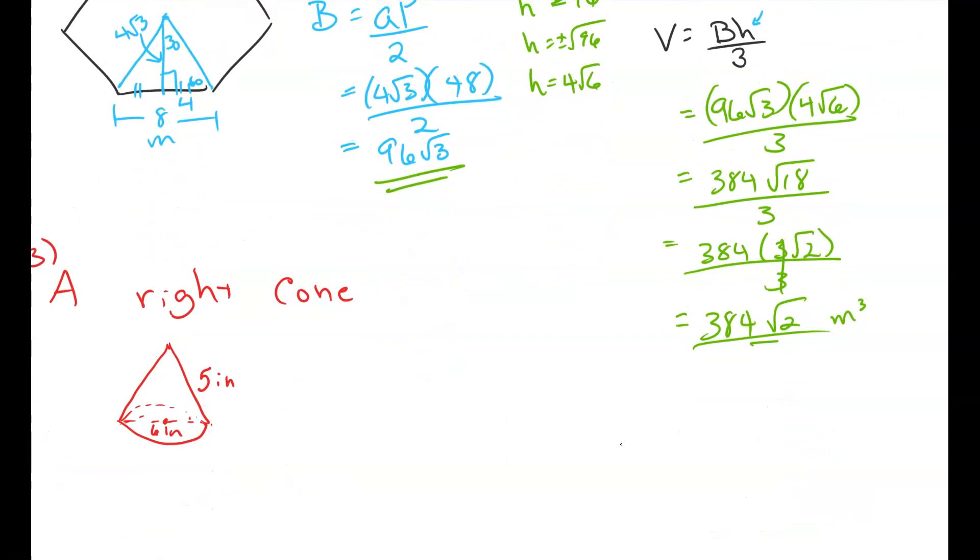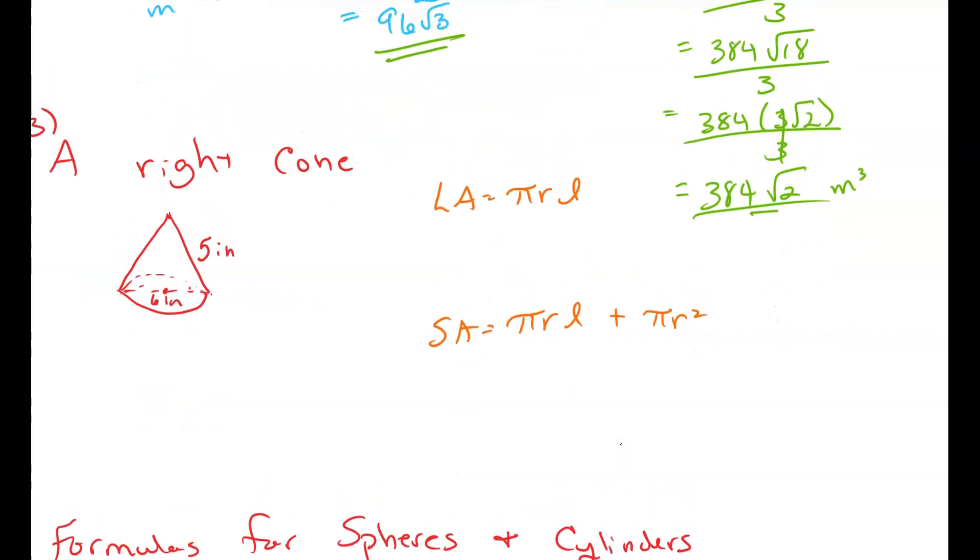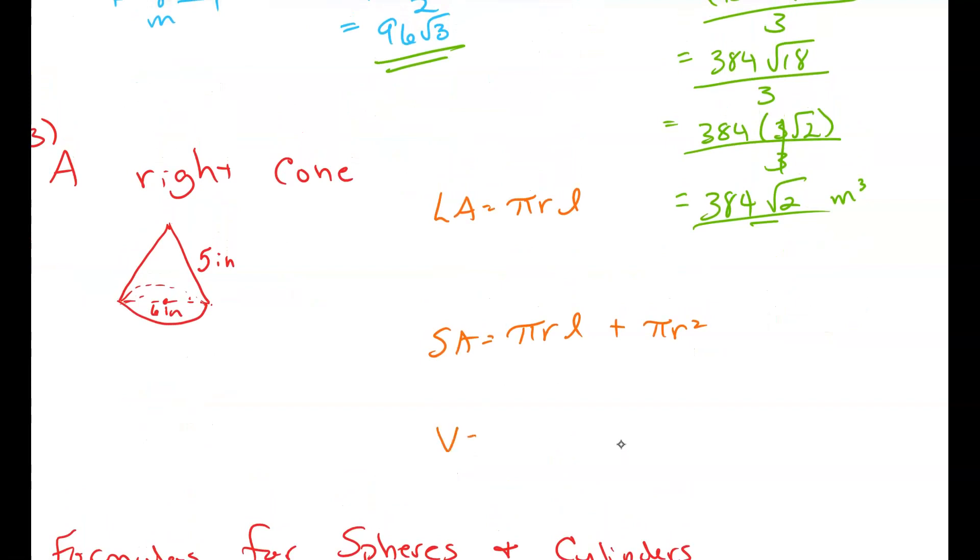Now cone formula, if you don't use the right formula, it's going to be wrong. I saw several of you use the cylinder formulas instead. But let's do a quick review. Lateral area for a cone is pi times the radius times the slant height. Surface area is pi times the radius times the slant height plus the area of the base, which is pi r squared. And we know the volume is just pi r squared times the height all over 3.